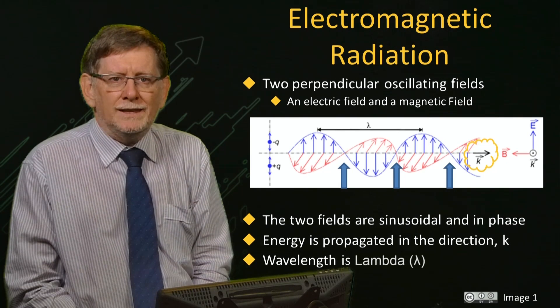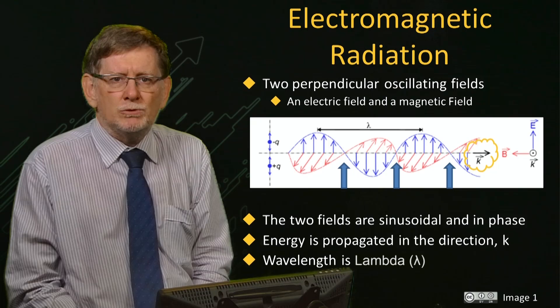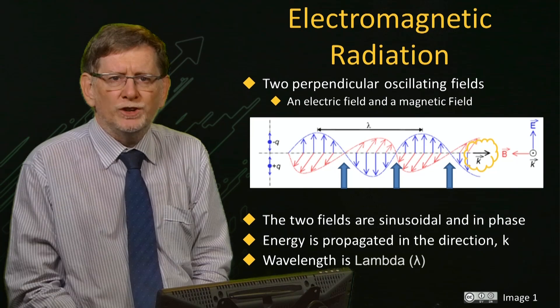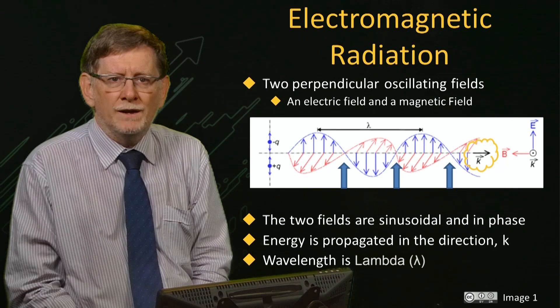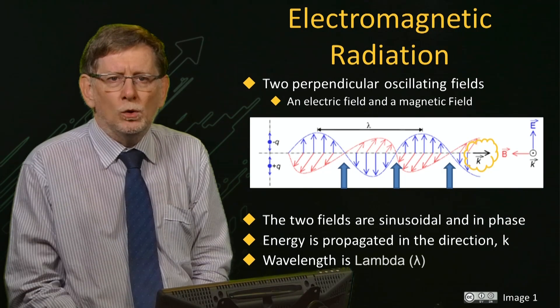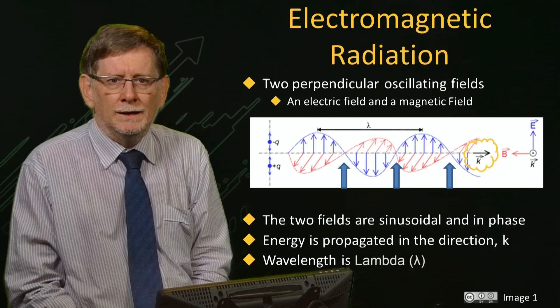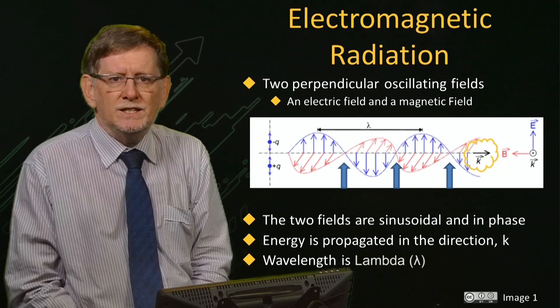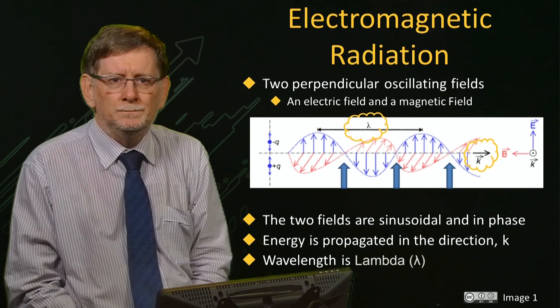The wavelength is the distance required to complete one full cycle of the wave, and we call this lambda. And this is the Greek symbol for lambda.